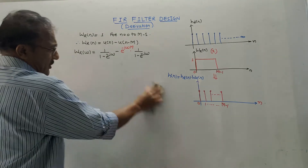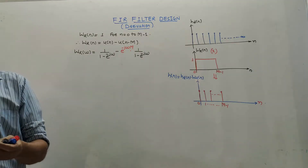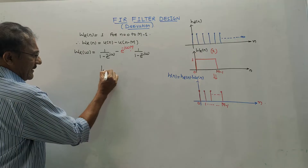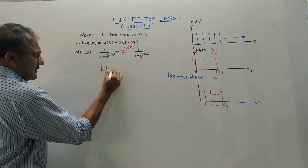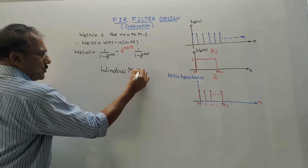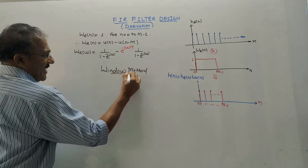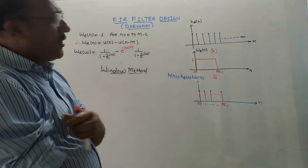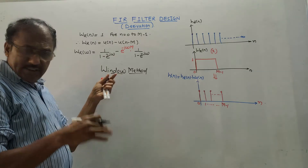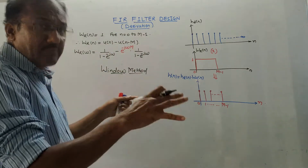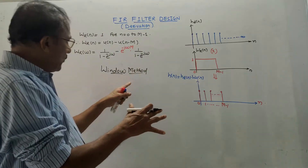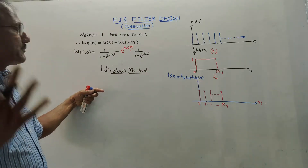Before starting the derivation, let me briefly explain the windowing method — also called the window method — which is used to design FIR filters. In this session, we will derive the expression for the window method, as well as discuss one very important concept related to it: Gibbs Phenomena.